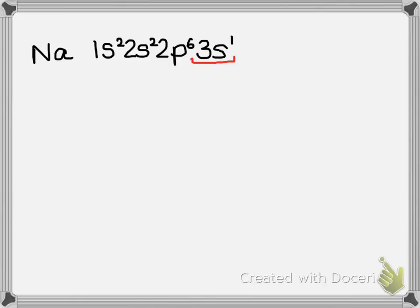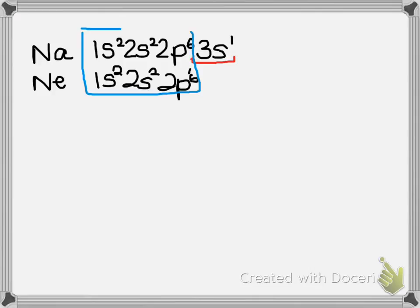Now the closest noble gas to sodium is neon. Neon's electron configuration is 1s2 2s2 2p6. The noble gases are very stable because their valence electrons are completely full, with S2 P6. Looking and comparing sodium and neon, sodium has inside of it the same electron configuration as neon. So what sodium will do is lose this one electron, the 3s1 valence electron.